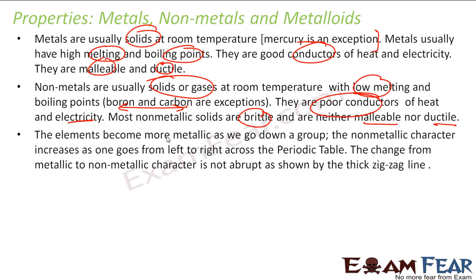The trend is that elements become more and more metallic as we go down the group. The nonmetallic character increases as we go from left to right. If you see in the periodic table, these elements on the right side are nonmetallic, and the nonmetallic character increases in that direction.